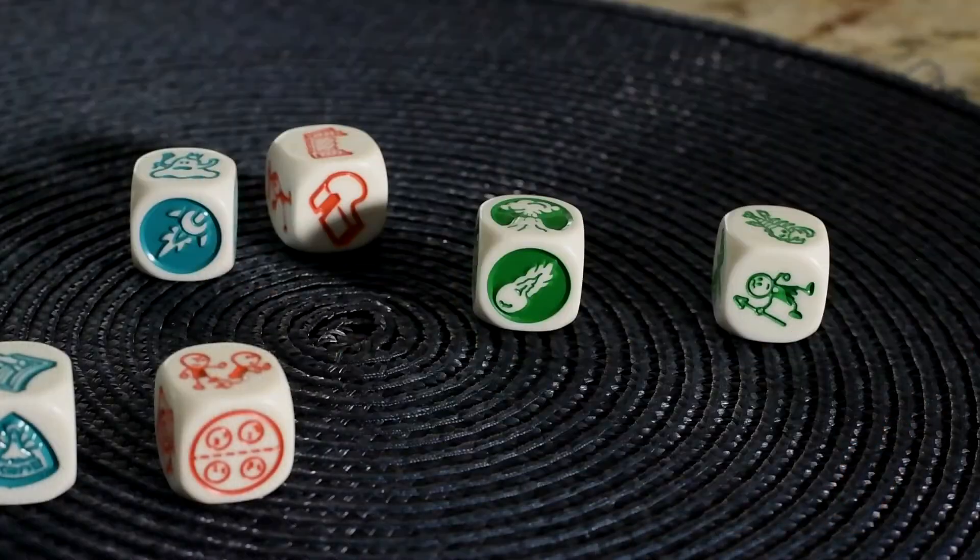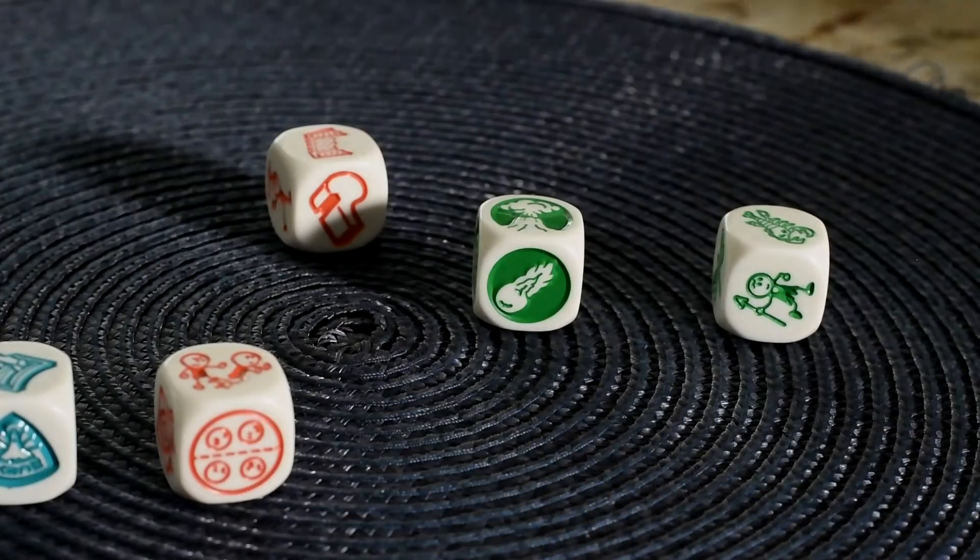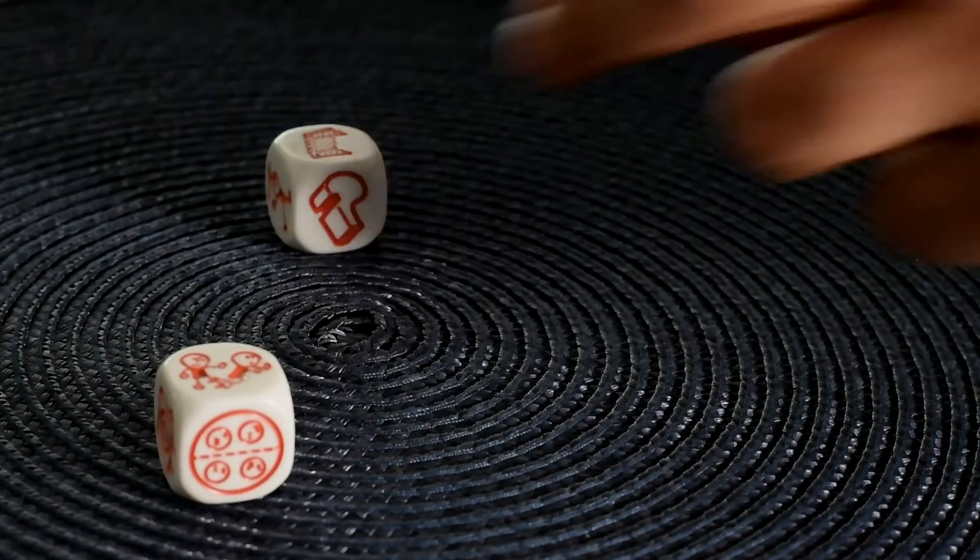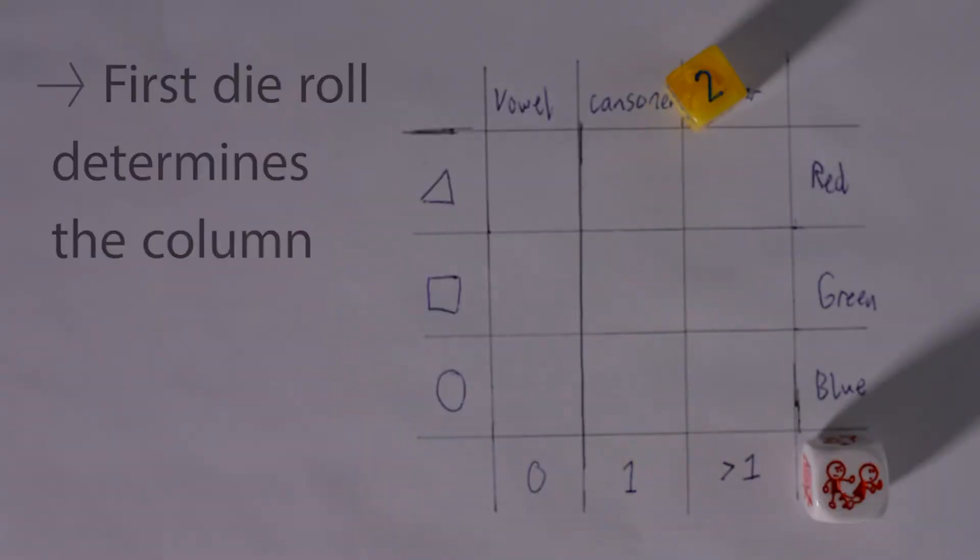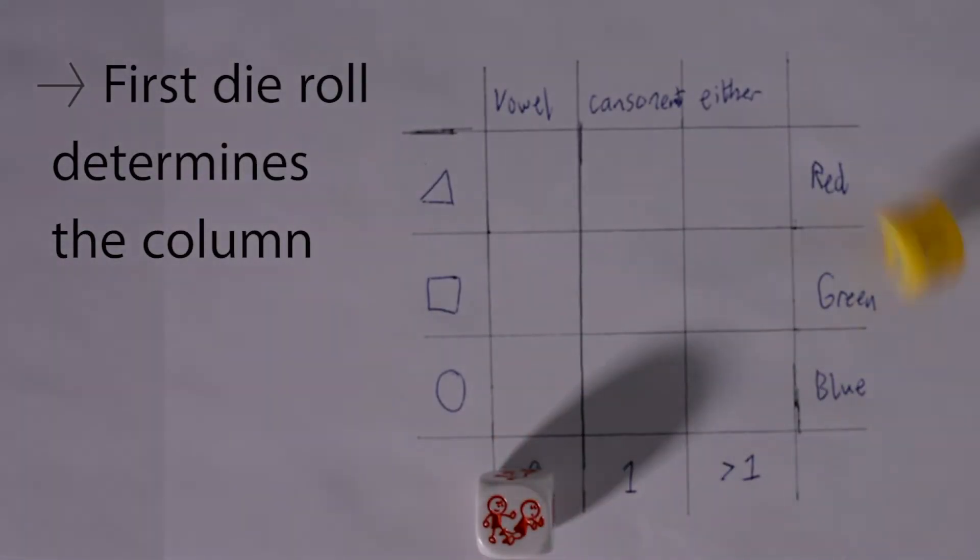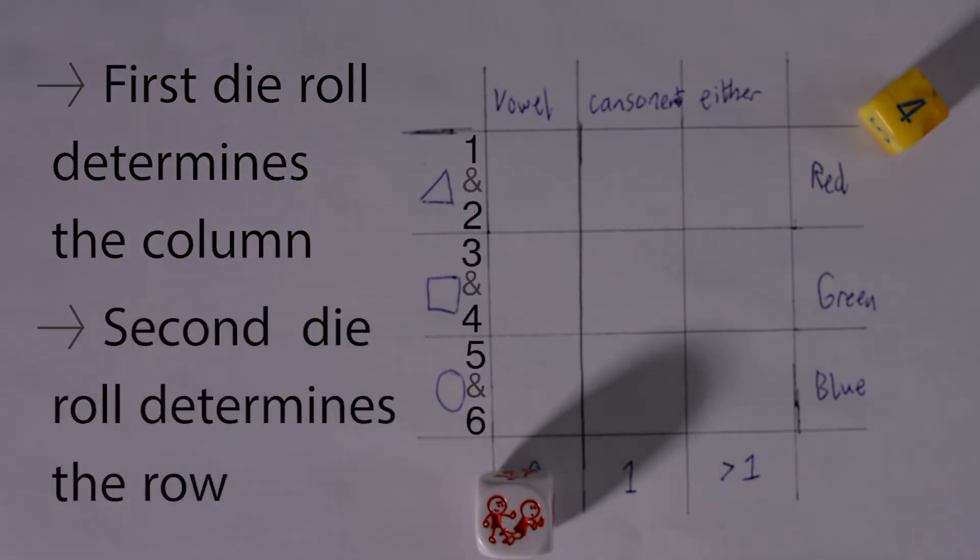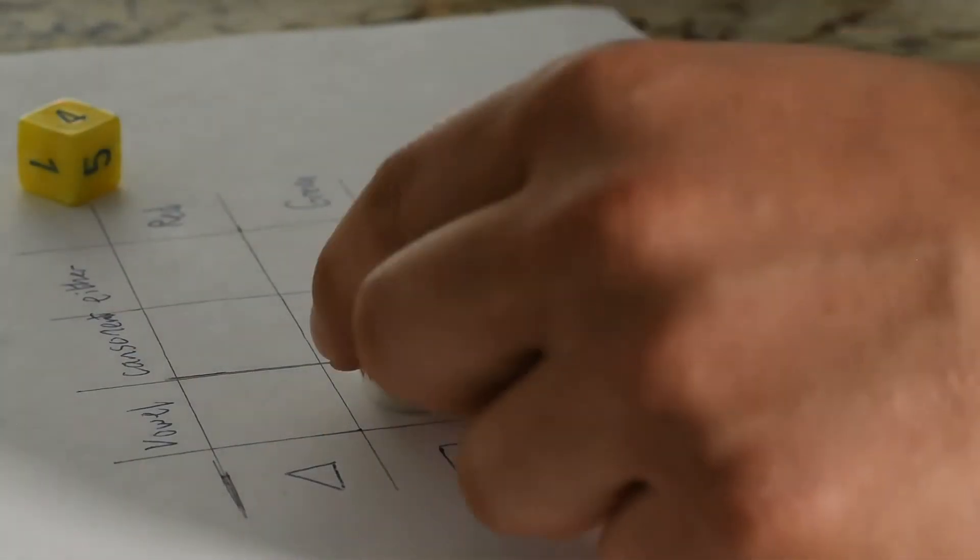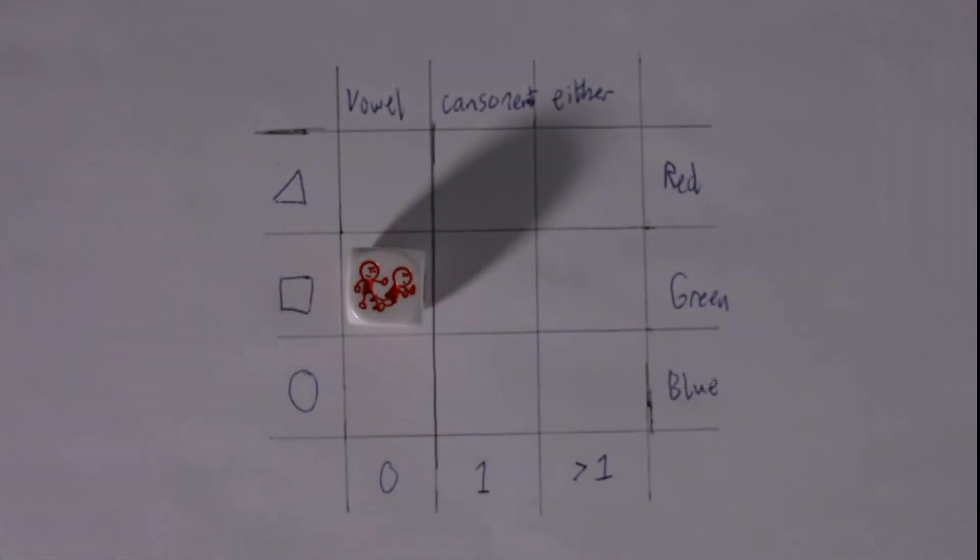With two players, we're going to need an extra six-sided dice to determine the placement of the dice on the grid. Picking the first dice determines how the game starts.